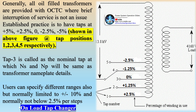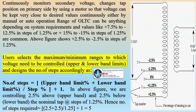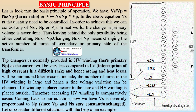In the real world, a change in primary voltage is never done, leaving only the possibility of controlling Ns or Np — that is, changing the active number of turns of the secondary or primary side. Tap changers are normally provided in the HV winding (primary Np) since the current will be very small compared to the LV side; interruption of high currents is difficult, so arcing and heat losses are minimized. Additionally, the number of turns in the HV winding is large, enabling fine voltage variation, and since the LV winding is placed nearer to the core and HV winding outside, accessing the HV winding is comparatively easier.